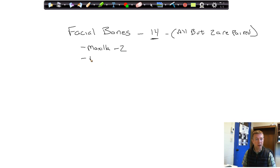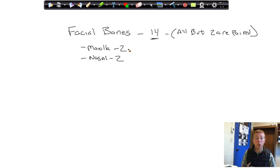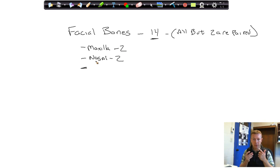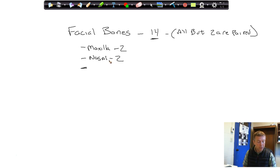The next one is our nasal bone — there are also two of these. These are tiny little bones that make up the bony portion of your nose. Your nose actually has two parts: a bony portion and then the end is elastic cartilage. So the nasal bones are actually a lot smaller and don't make up the entire nose. The nasal bones and the maxillary bones are connected to one another to make up the area around your nose.